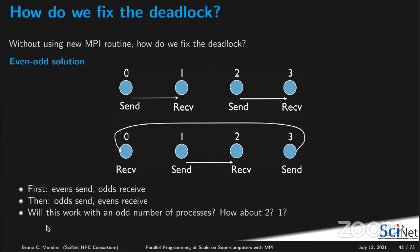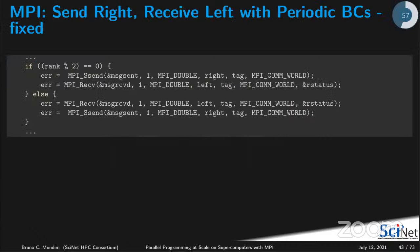A question for you to think about for Wednesday: will this even/odd solution work with any number of processes — how about two, or one? In the solution code, if rank modulo 2 is even, the even tasks send and the odd tasks receive — so the send is paired with the receive. Once that is done, you go to the next step where the odds send and the evens receive. If I run the fixed fourth_message.c code, all of them send the right values and get the correct numbers from their neighbors.